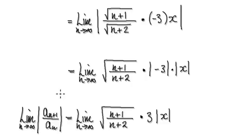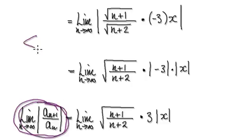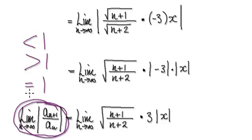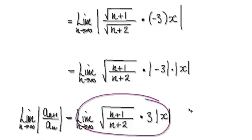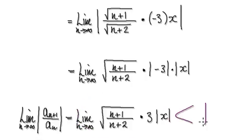So when it comes to the ratio test, we always need to compute this value here. If this value is less than 1, we know it's going to converge. Greater than 1 it's going to diverge. Equals 1 is inconclusive. So for convergence, we want to make this value here to be less than 1.